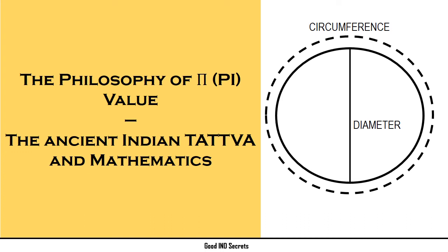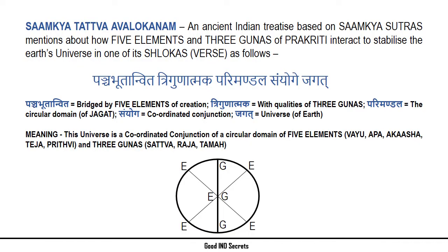In this video, let us see the philosophy of Pi value as per the ancient Indian Tattwa and Mathematics. Samkhya Sutras mention how five elements and three gunas of Prakriti interact to stabilize the Earth's universe. According to this, the universe is a coordinated conjunction of a circular domain of five elements and three gunas.